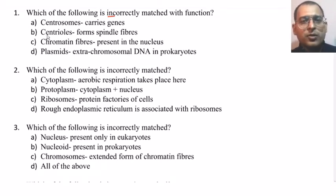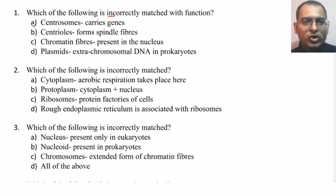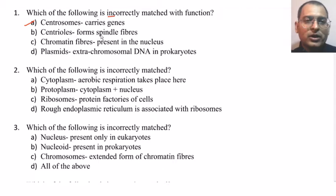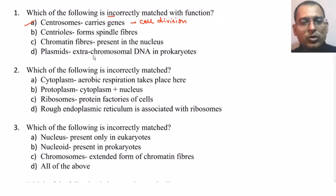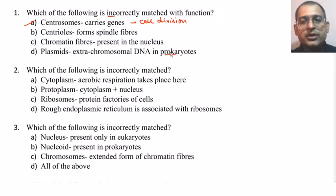You can always pause the video to answer the question and check back to see the right answer. The given option centrosome is incorrect because centrosomes are composed of a pair of centrioles, and centrioles form spindle fibres, so they are involved in cell division. Centrioles forming spindle fibres is correct; chromatin fibres are present in the nucleus; plasmids are extra-chromosomal DNA present in prokaryotes, that is bacteria.